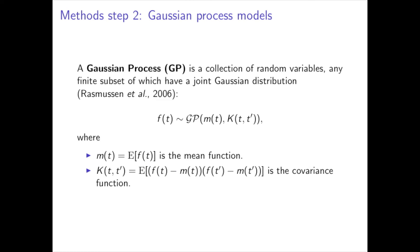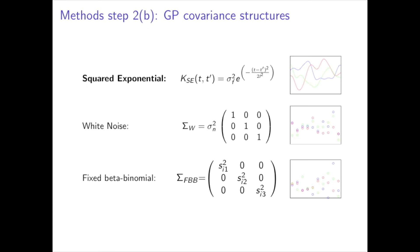A Gaussian process is a collection of random variables, any finite subset of which have a joint Gaussian distribution, and it is defined by its mean and covariance functions. In our models, we have used three different types of covariance functions.